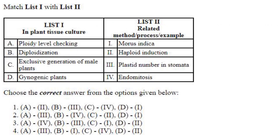In plant tissue culture and the related method or process: ploidy level checking — plastid number in stomata, A3. We just discussed that. Diploidization — endomitosis, B4. Exclusive generation of male explant — haploid induction, C2. Gynogenic plants — Morus indica, D1. So the answer is option 2: A3, B4, C2 and D1.